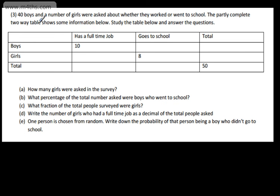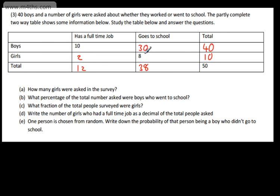Let's do one more. 40 boys and a number of girls were asked about whether they worked or went to school. The partly complete two-way table shows some information below. We've got boys and girls, has a full-time job, goes to school. 40 boys — we put that there. If there were 40 boys, there are going to be 10 girls, as we've got a total of 50. If 10 boys have a full-time job, 30 are going to go to school. 30 and 8 is 38; 38 from 50 gives us 12; and 10 from 12 gives us 2.